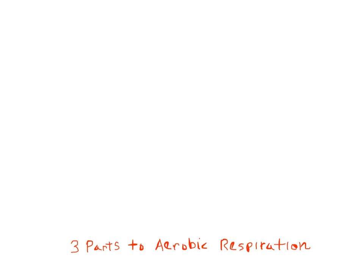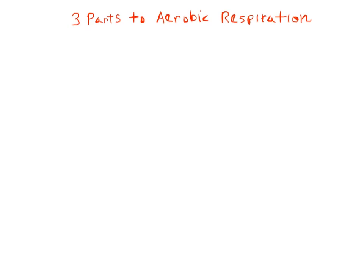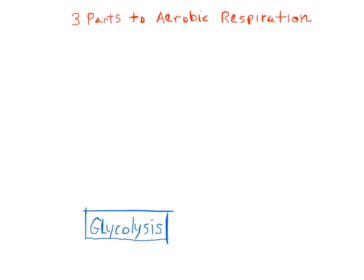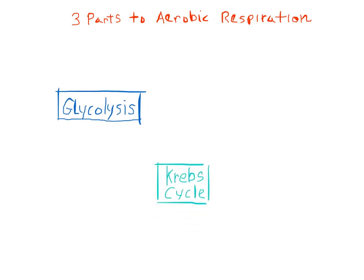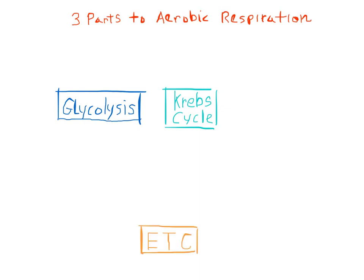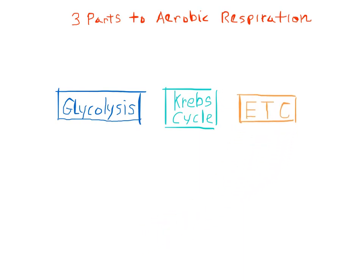In this video I'm going to go over the three basic parts to aerobic respiration. The first part is called glycolysis. The second part is called the Krebs cycle. And the third part is called the electron transport chain.